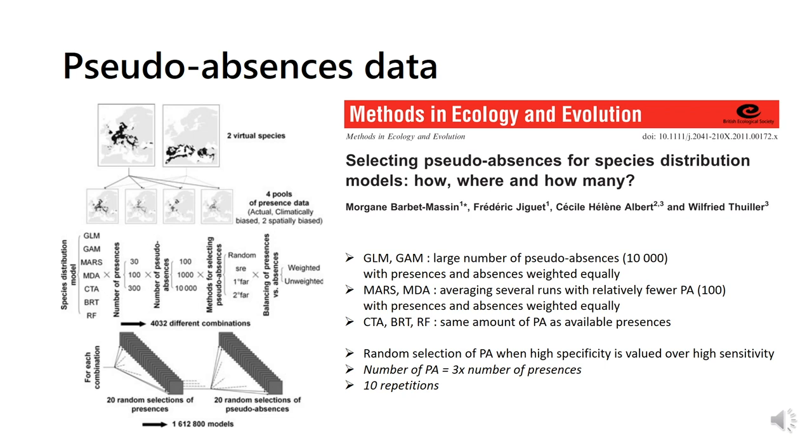More details can be found in the article, but general results were that GLM and GAM obtained better results when selecting a large number of pseudo-absences, while MARS and MDA had better results when averaging several ones with few pseudo-absences, all having presences and absences weighted equally. CTA and classification methods obtained better results when selecting the same amount of pseudo-absences as available presences.